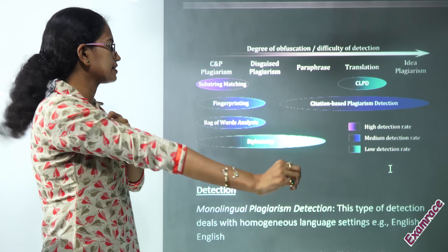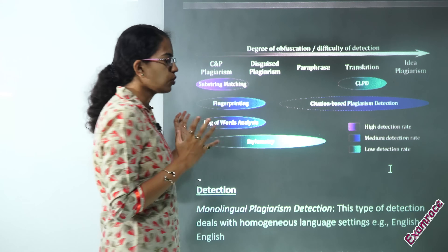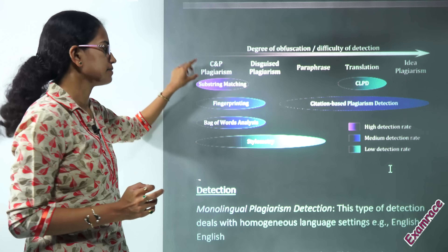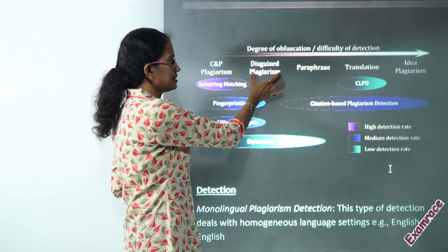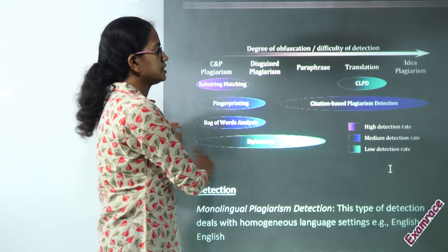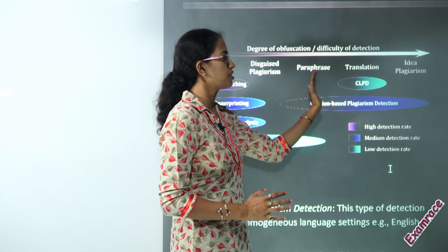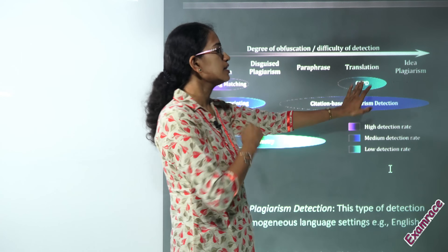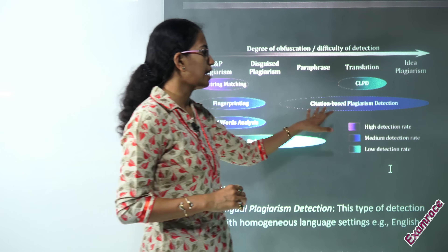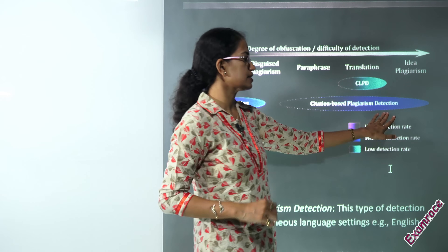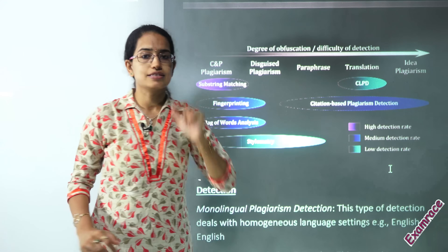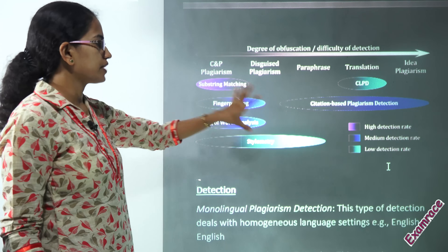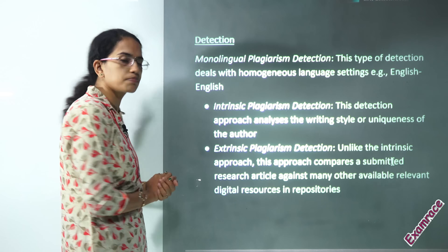Regarding the degree of detection, the highest detection rate is achieved by substring matching, mainly seen in copy-paste plagiarism. Medium detection rates apply to disguised plagiarism or copy-paste detected by fingerprinting or bag of words. Stylometry can be used across copy-paste, disguised, or paraphrased content. For translation, we use Cross-Lingual Plagiarism Detection (CLPD). Citation-based plagiarism detection is also used to detect idea plagiarism, since copying an idea can be checked through citation analysis.